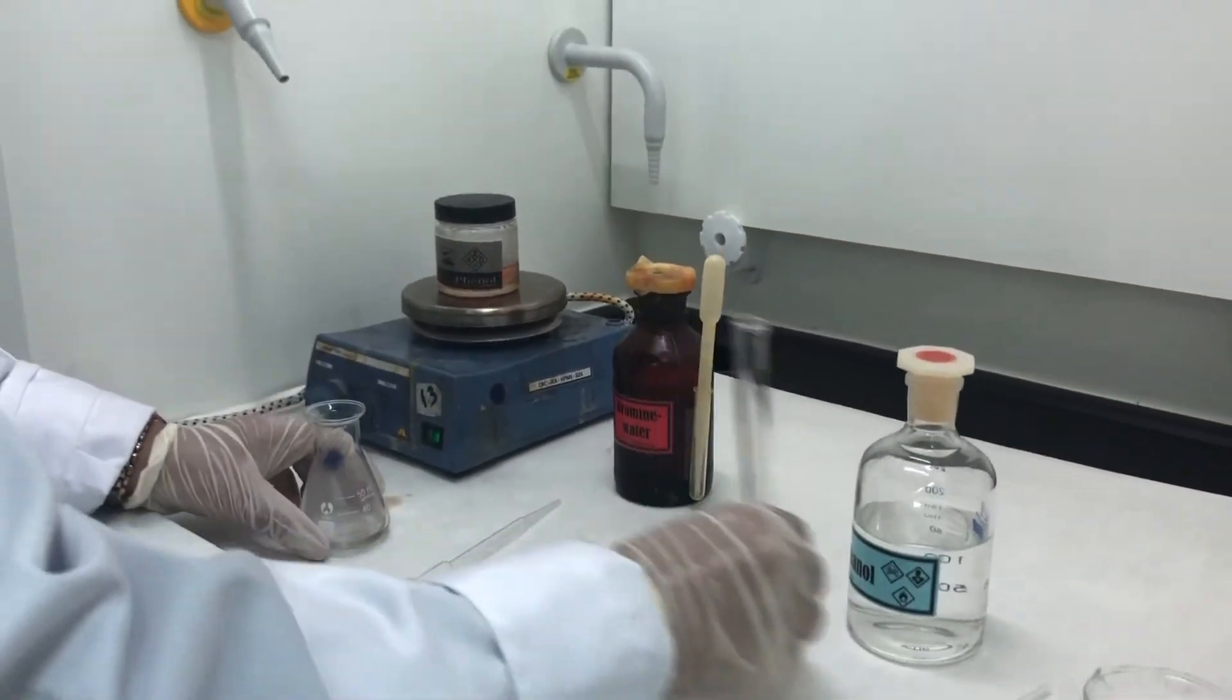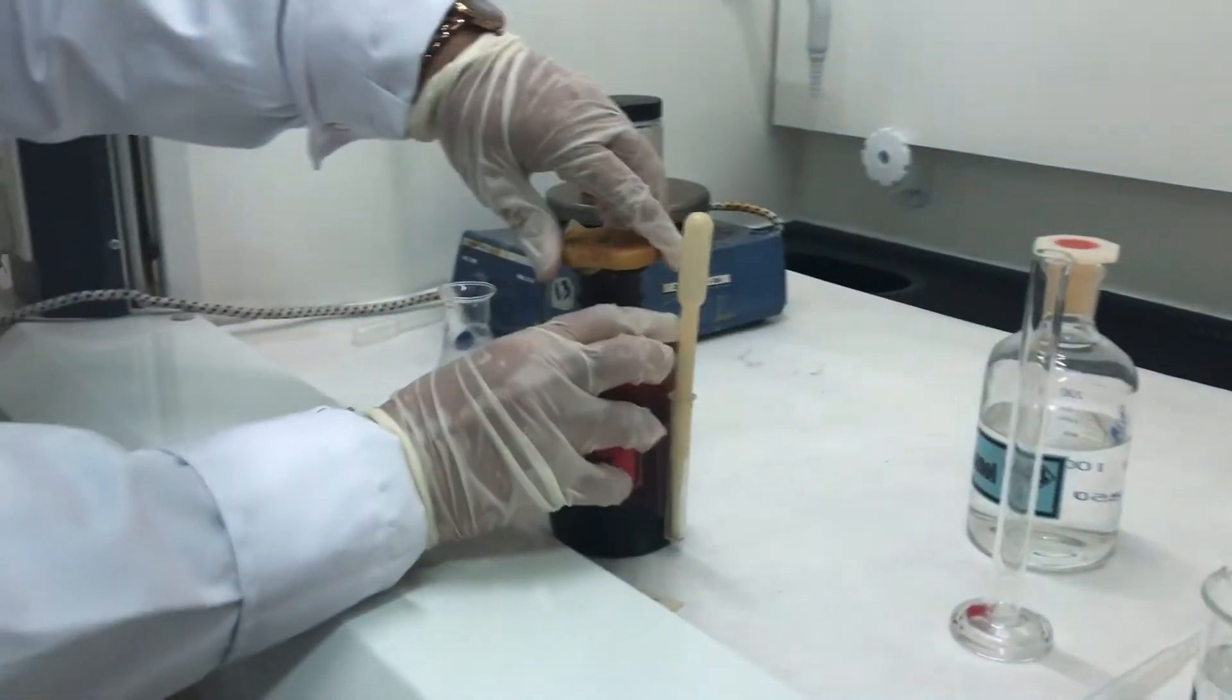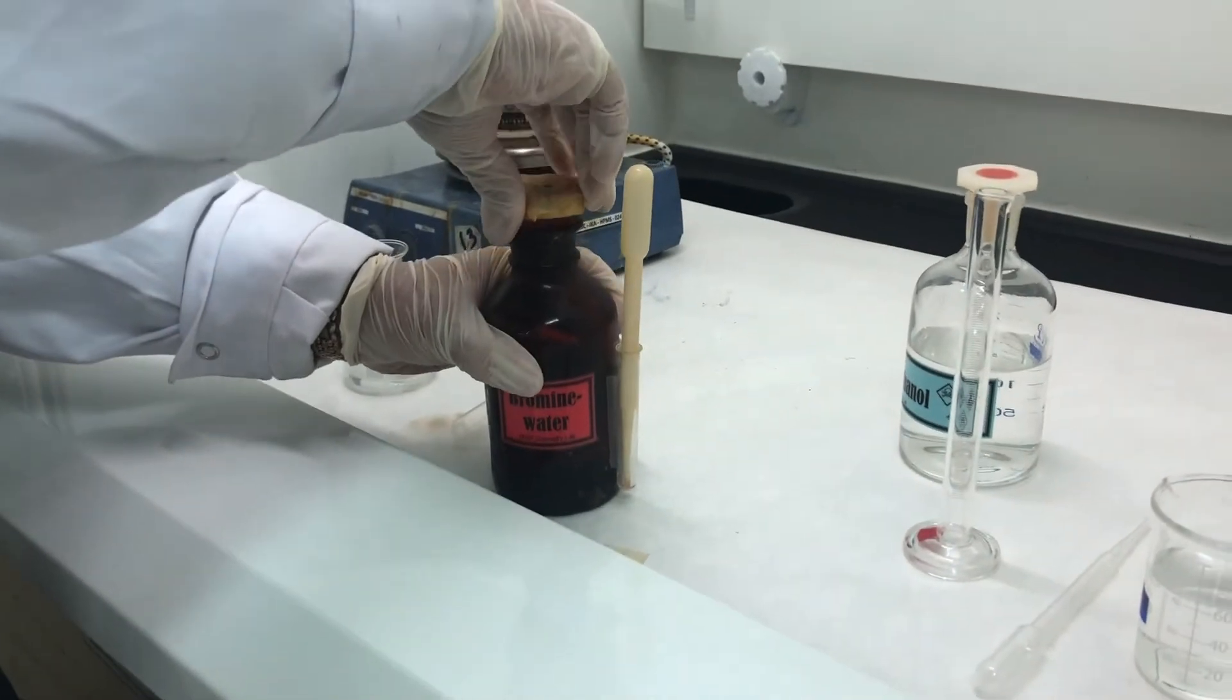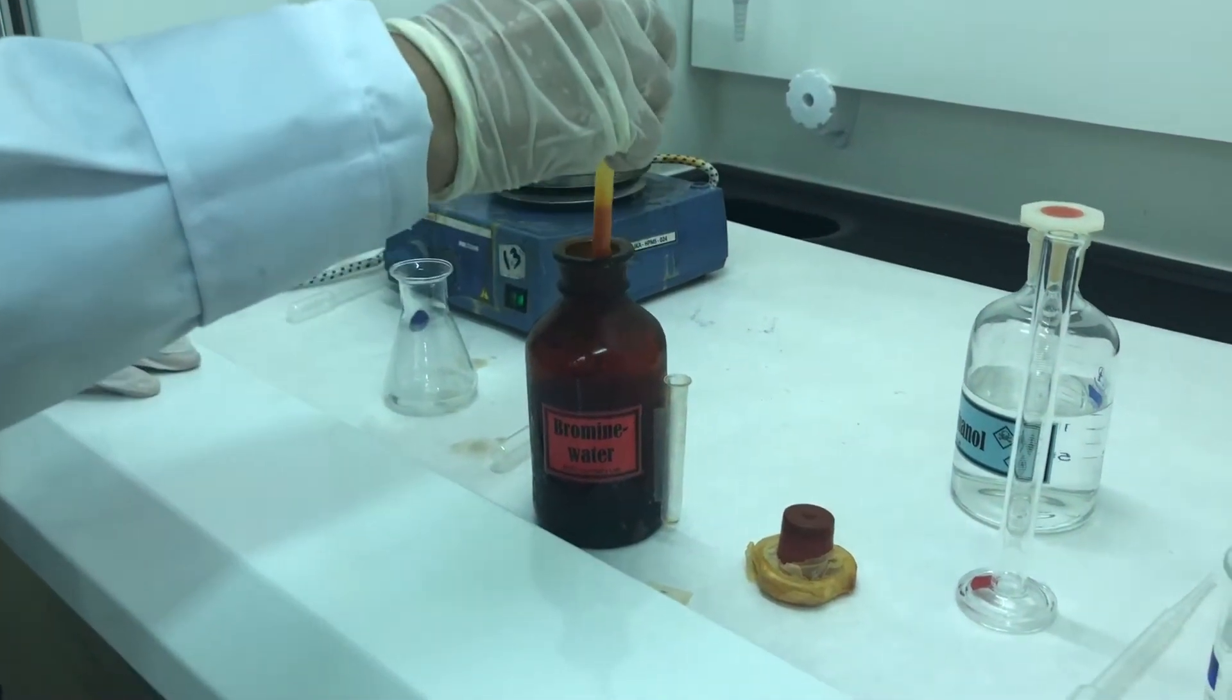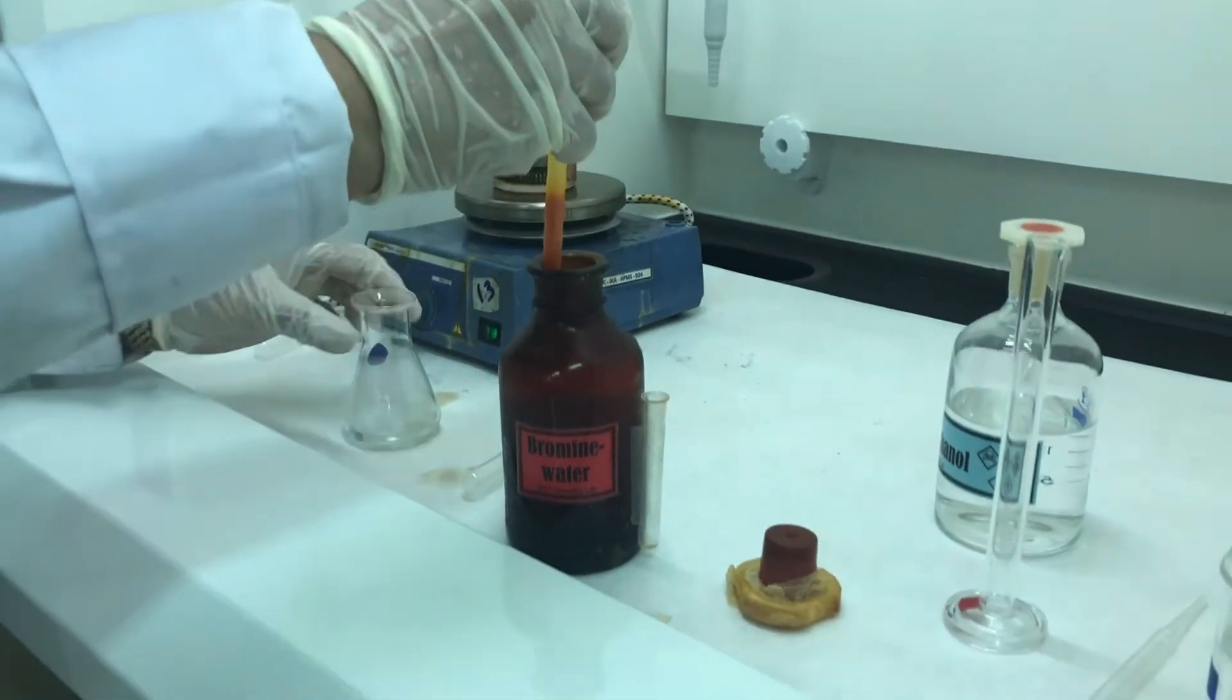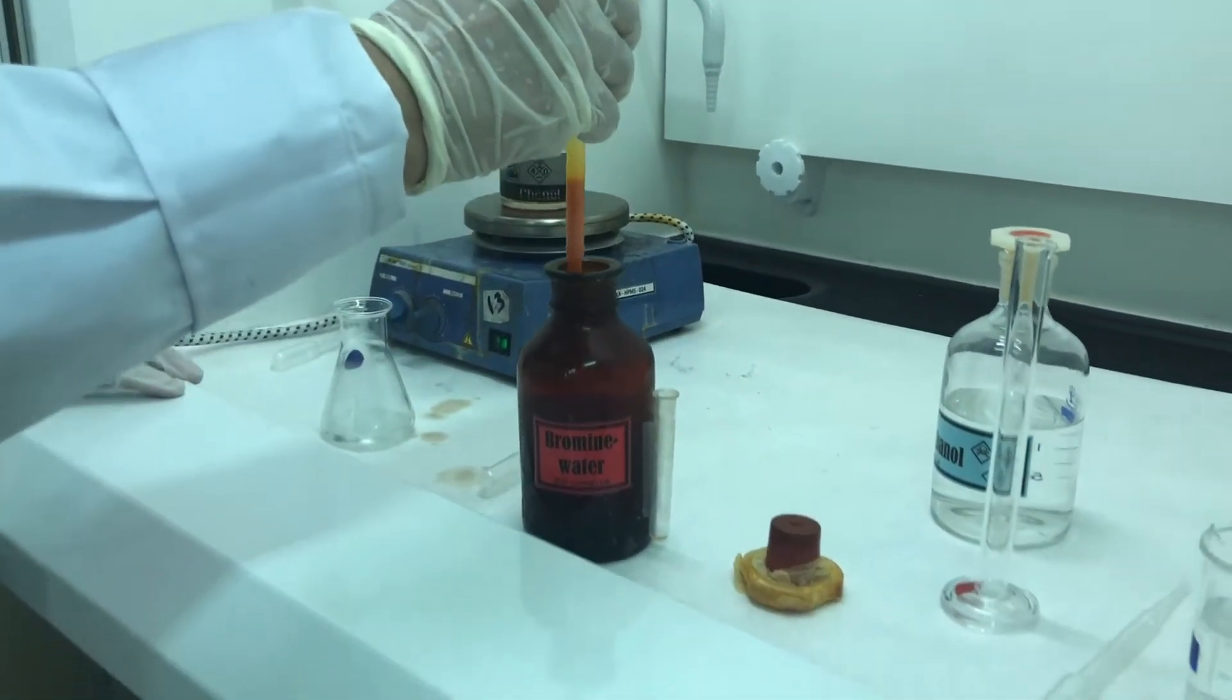So my next step now is coming to bromine. Since we are doing halogenation of phenol, in halogenation we are doing bromination. You have to be very careful when you open the bromine bottle. It's highly corrosive, highly concentrated. Now, as you can see, the color of the beaker, right now it's a colorless liquid, a solution.